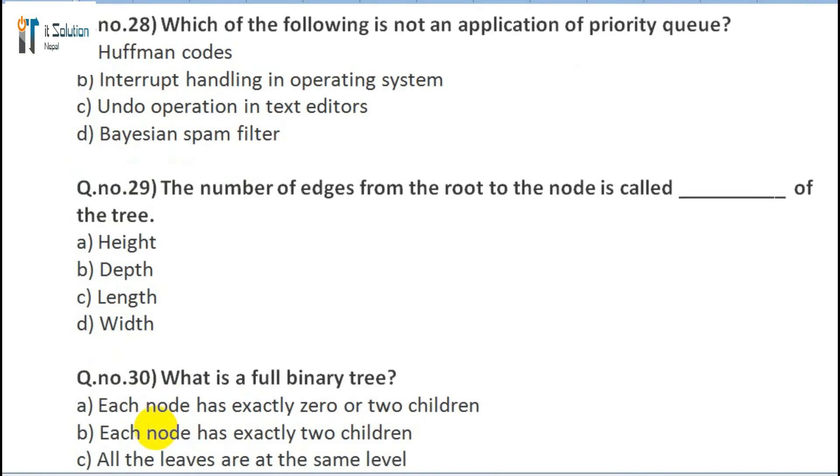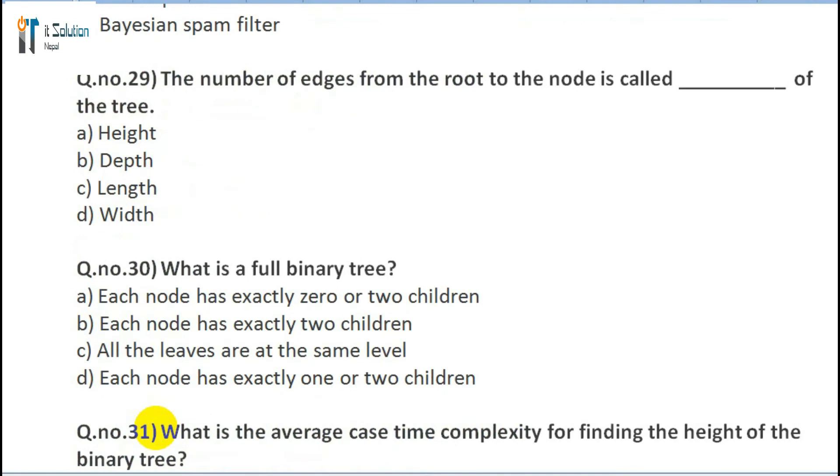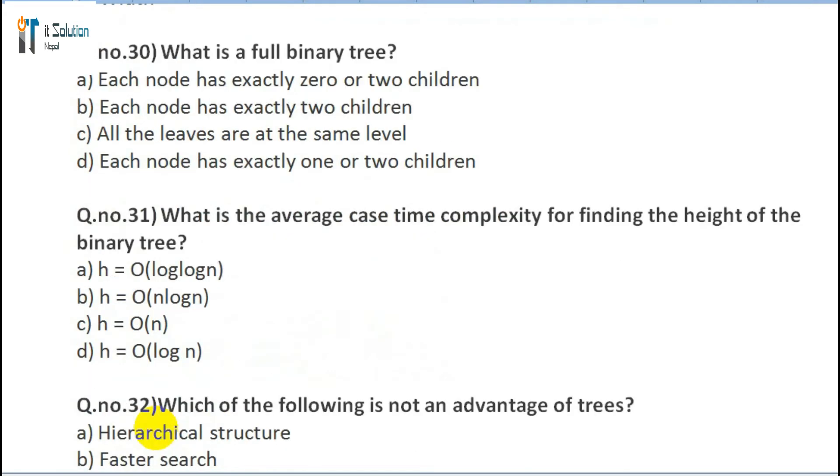A) Huffman codes, B) Interrupt handling in operating systems, C) Undo operation in text editors, D) Spam filter. Question 29: The number of edges from the root to the node is called the ___ of the tree. A) Height, B) Depth, C) Length, D) Weight. Question 30: What is a full binary tree? A) Each node has exactly zero or two children, B) Each node has exactly two children, C) All the leaves are at the same level, D) Each node has exactly one or two children.